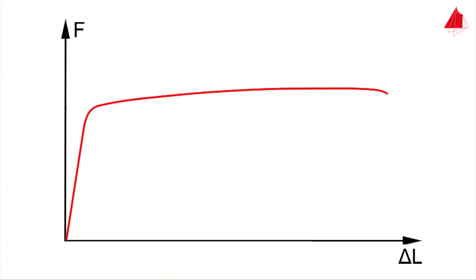As a common substitute for the yield strength, the 0.2% proof strength is used. It is the stress that causes 0.2 percent of plastic deformation in the material. And this is the way to calculate it.